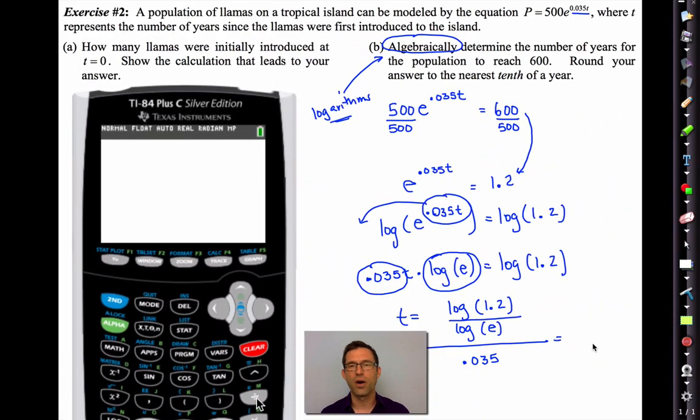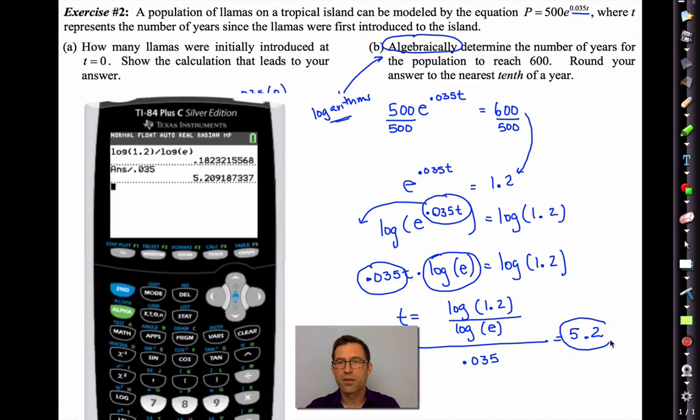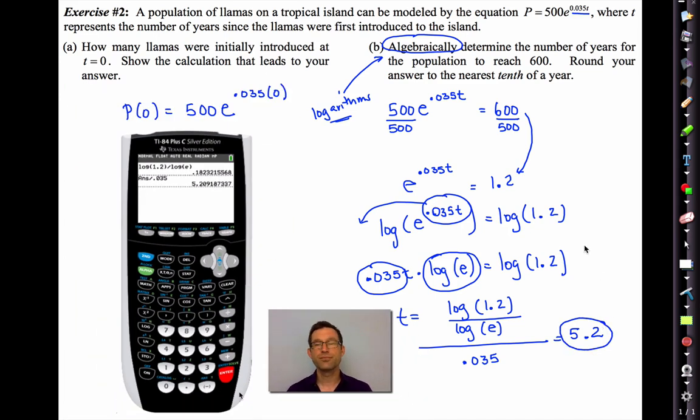Now watch as I type it in. I'm going to do log 1.2 divided by log. Now I'm just going to go grab that e parentheses. And I could hit enter now. Let me do that. Enter. That's not my final answer. I still have to divide by 0.035. So let me do that now. Divided by 0.035 equals, and there I have my final answer. 5 point, let's see, the nearest tenth, 5.2.